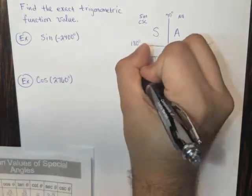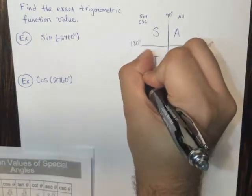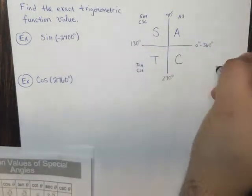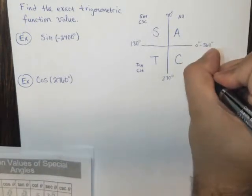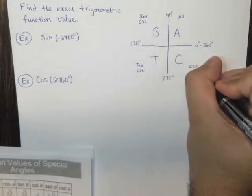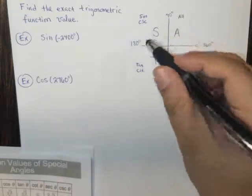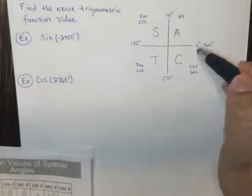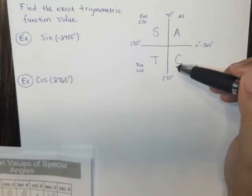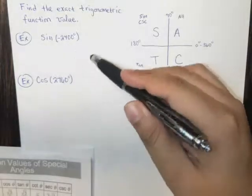Here, tangent and its cousin, cotangent, are positive. And here, this is where cosine and its cousin, secant, are positive. All students take calculus. So we're going to use this in just a second to kind of help answer this question.